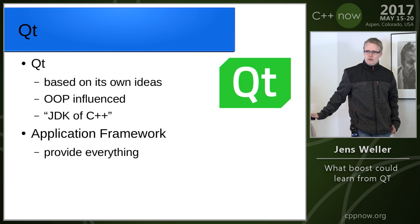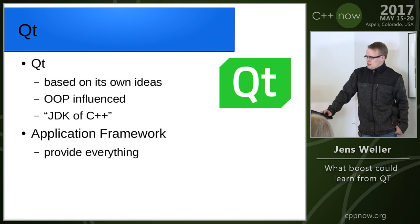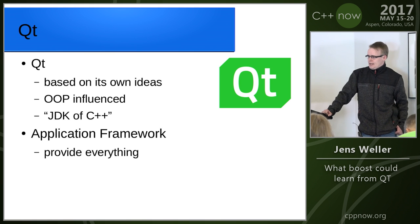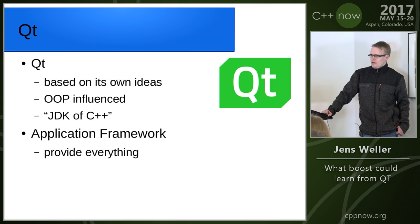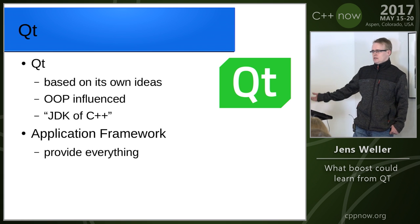Qt, on the other hand, isn't influenced by the standard or by a group of people which creates a standard. Qt is based on its own ideas. It's heavily influenced by the object orientation which was popular in the 90s where it also has its roots, and the ideas made popular through Java and other languages. So you kind of can call it the JDK of C++. It understands itself as an application framework, providing everything you need to write an application in C++.